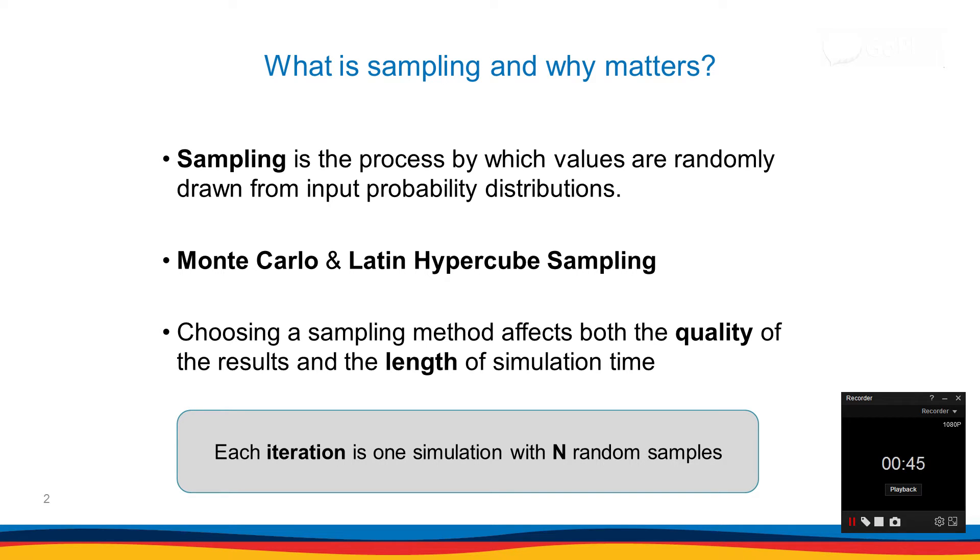Before I get into details, I want to explain the terminology I'm going to use for the rest of this presentation. Whenever I say iteration, I mean one simulation with n random samples. So n can be 100, 1000, or 10,000—one simulation with n random samples drawn from the probability distribution.